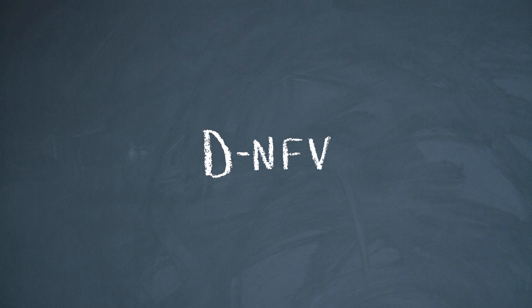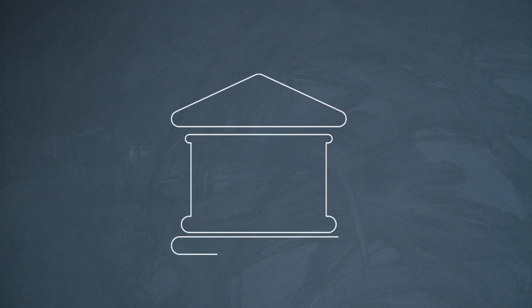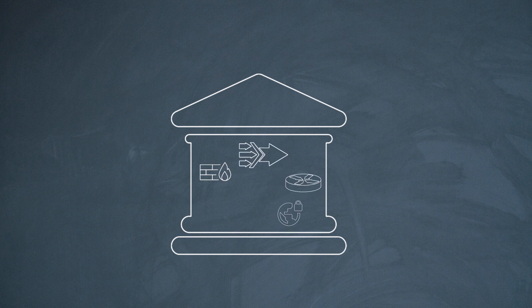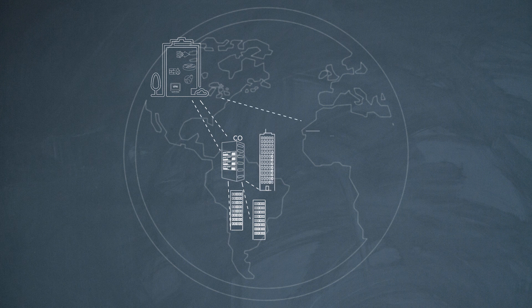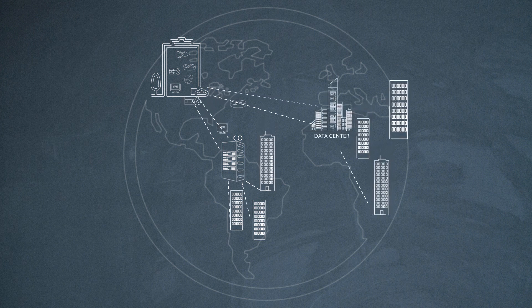Our branch office sample scenario here is a classic example of Distributed NFV — that's the 'D' in DNFV. As we said, those network functions reside at the branch office or at the customer premise, but since these are software functions, in reality they can reside anywhere, including in a centralized data center or central office.